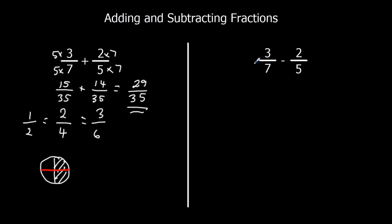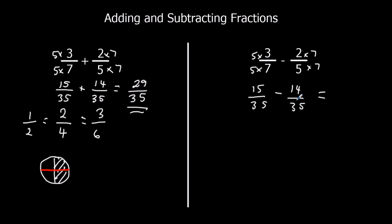So it's the same thing for subtracting — we need to get a common denominator. Because we've got the same numbers, it's going to be the same process. So it's going to be 15 thirty-fifths take away 14 thirty-fifths. I've got 15 of them, I'm taking off 14 of them — 15 take away 14 is 1, so I've got 1 left. I've got 15 thirty-fifths of a pizza, I eat 14 slices, I've got 1 slice left: 1 thirty-fifth.